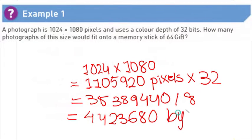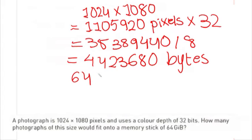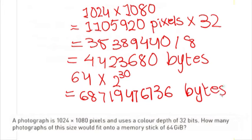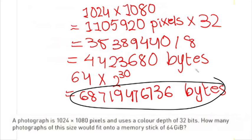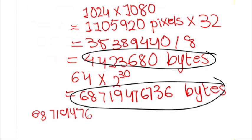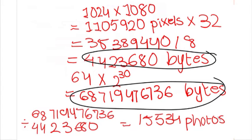Now, we would have to convert the memory stick size, which is 64GB, into bytes. In order to do that, we would multiply the 64 by 2 to the power of 30, which would result in 68719476736 bytes. Now, we would finally divide the memory stick size by the file size. 68719476736 divided by 4423680 would give us the answer 15534. This is the number of photos.